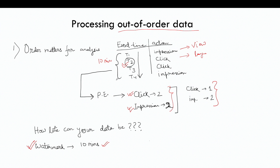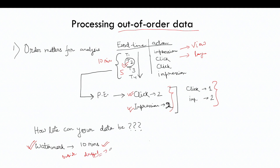In this case, the data is late by five minutes and our watermark time was 10 minutes. So Spark will correctly aggregate; any data coming outside this watermark will be dropped and will not be aggregated. This is one of the challenges — processing out-of-order data — and Spark streaming has the capability of watermarking to handle these kinds of scenarios.